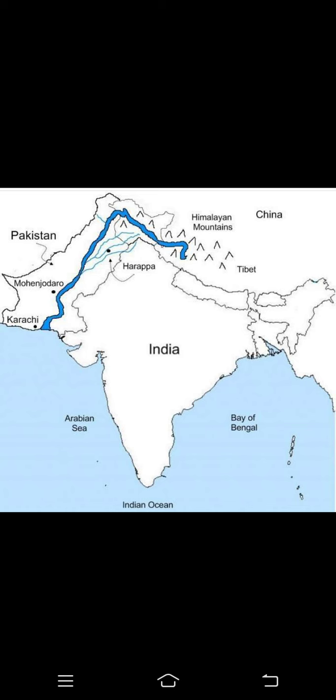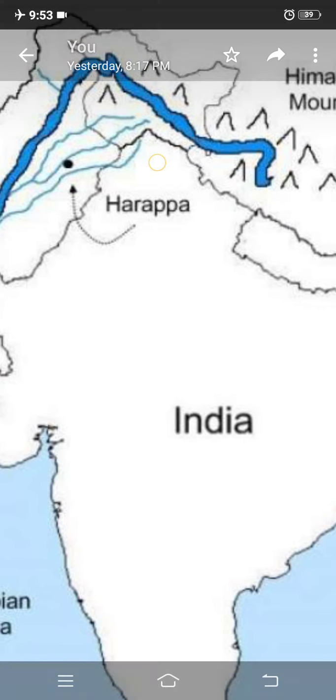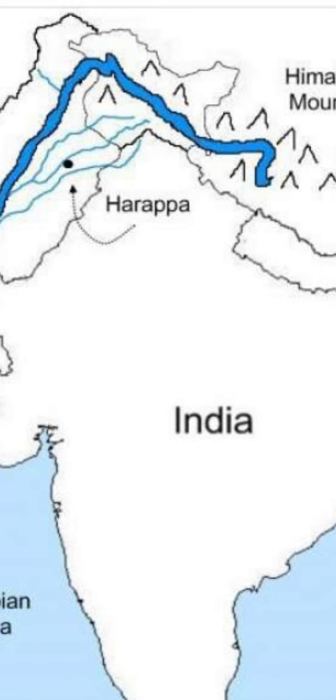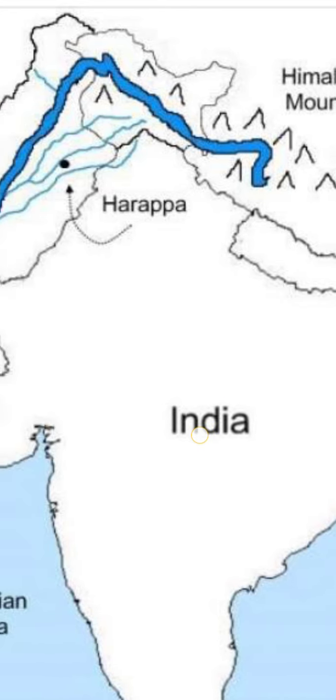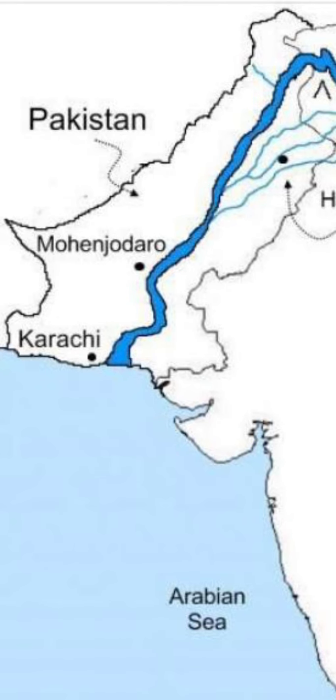The Sindhu River is also known as the Indus River. It flows from the Himalayas, and some part of it also goes to Pakistan. The majority tributary of River Sindhu, Sultaj, originates near Mansarovar and flows westward to the Punjab plains. It then goes towards the Pakistan side and meets the Arabian Sea.